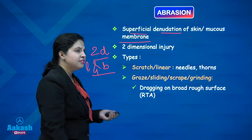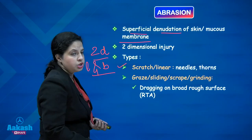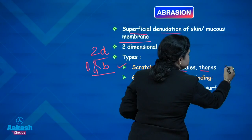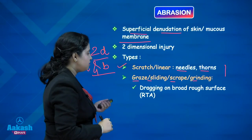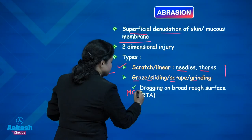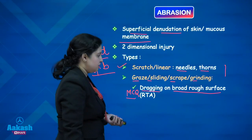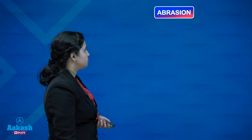There are various types of abrasion. Number one is Scratch or Linear Abrasion — very simple to understand. It happens with any pointed object with a small surface like a needle or a thorn. Graze, sliding, scrape, or grinding are various terminologies for the same type of abrasion, most commonly encountered in road traffic accidents where there is dragging on a broad rough surface.